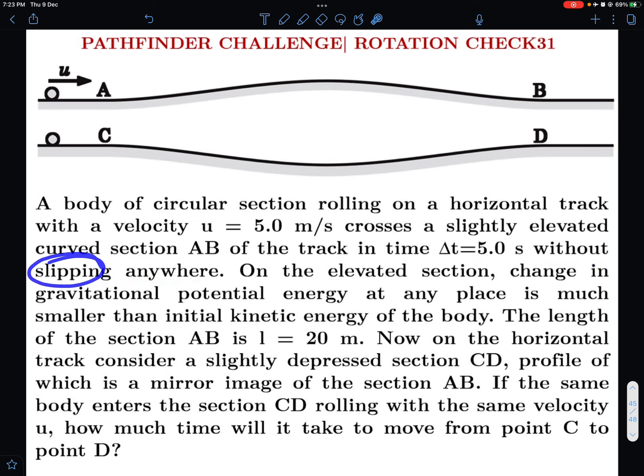Crosses in 5 seconds without slipping anywhere, pure rolling only. On the elevated section, change in gravitational potential energy at any place is much smaller than initial kinetic energy of the body. The length of the section AB is L = 20 meters. So this whole length is 20 meters.